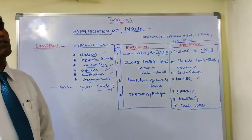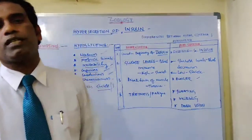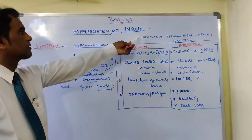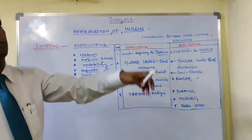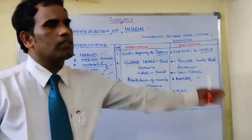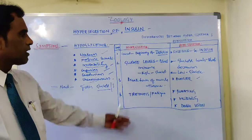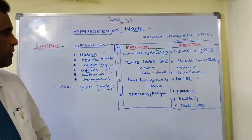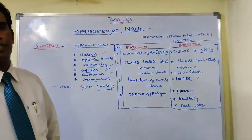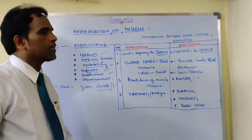So to summarize the differences: hyperglycemia is caused by insulin deficiency, hypoglycemia is caused by hypersecretion of insulin — that is why it is called hyperinsulinism. In hyperglycemia, glucose levels are high in the blood; in hypoglycemia, glucose levels are low. Hyperglycemia features tiredness, fatigue, and breakdown of fat and muscles; hypoglycemia features hunger, sweating, irritability, and double vision.